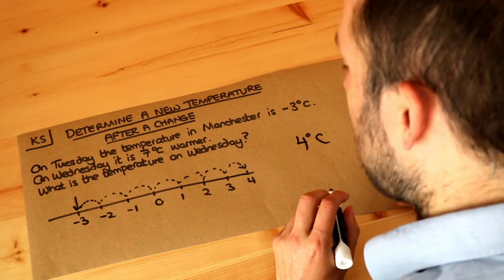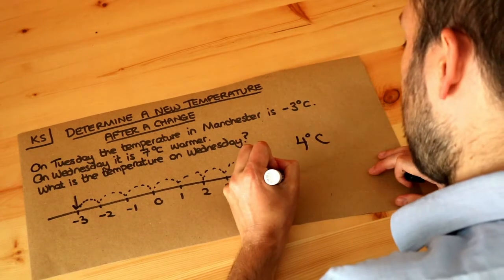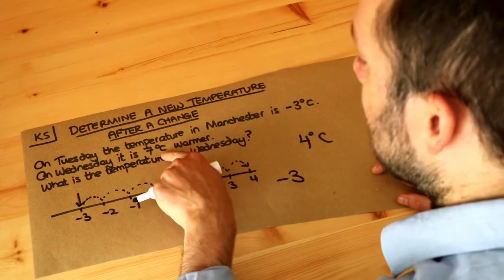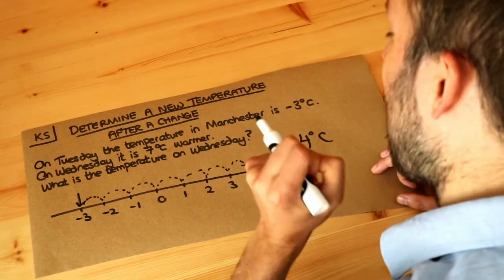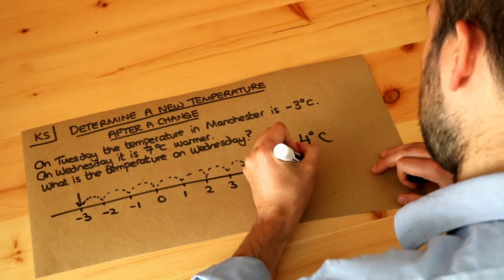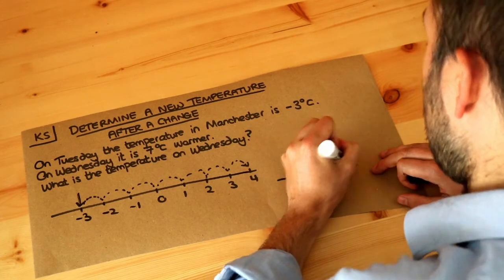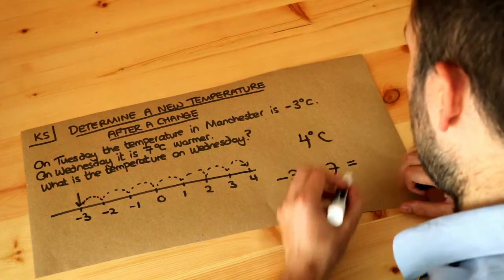If you want to write your working for this you could just say well it's currently minus three Celsius. And if it gets seven degrees warmer that means we're adding seven to the temperature. So we add seven and then minus three plus seven is four.